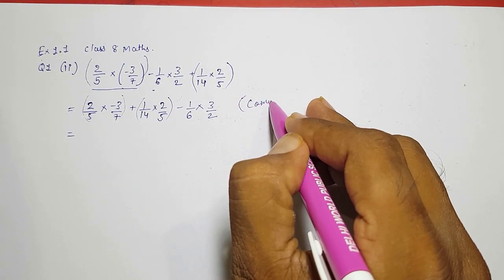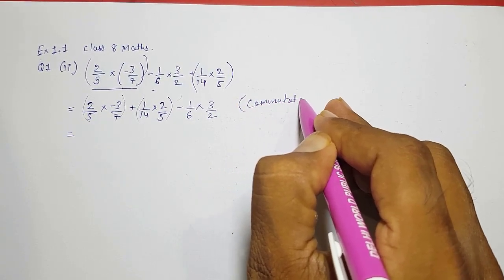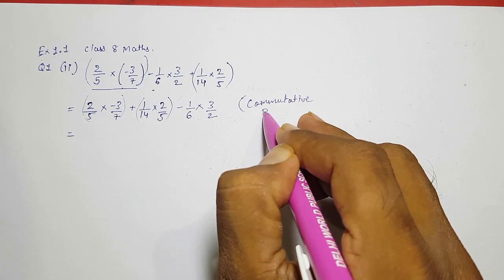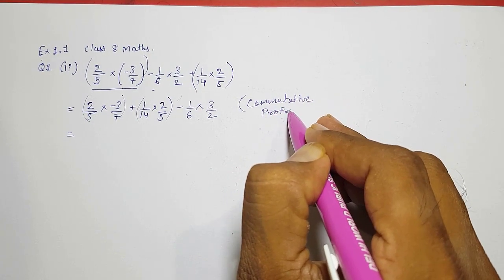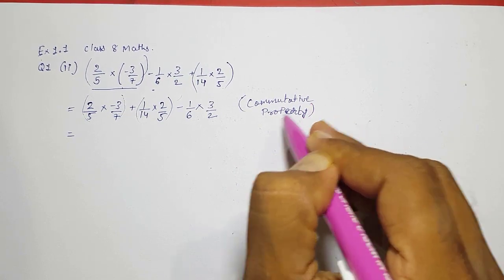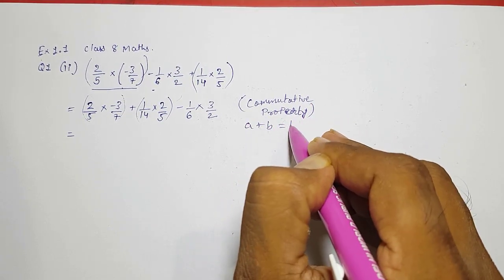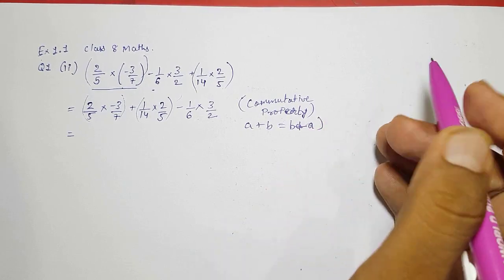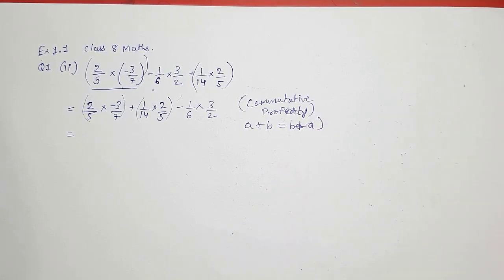We had used commutative property. What is commutative property? a plus b is equals to b plus a. This is our commutative property, so this we had used.